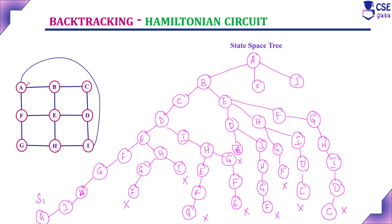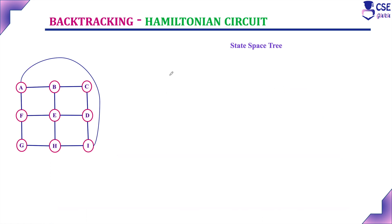Considering the path through vertex B, only one solution is possible. The first solution is: A to B, B to C, C to D, D to E, E to F, F to G, G to H, H to I, and I to A.